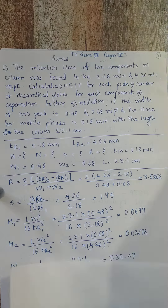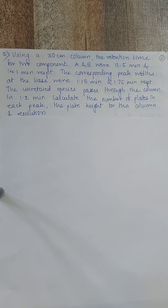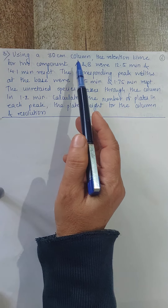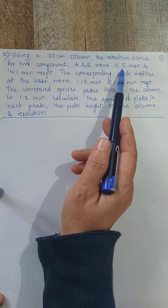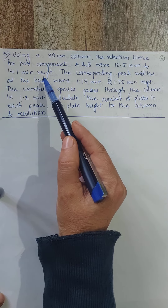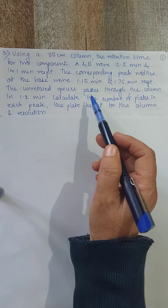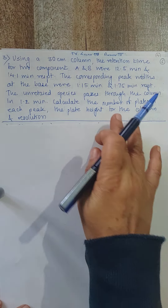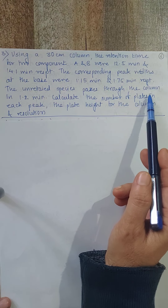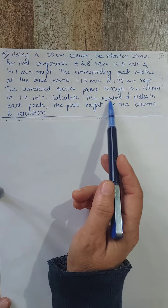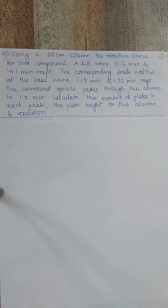Third problem: Using a 30 cm column, the retention times of two components A and B were 12.5 minutes and 14.1 minutes respectively. The corresponding peak widths at the base were 1.15 minutes and 1.75 minutes respectively. The unretained species passes through the column in 1.2 minutes. Calculate the number of plates in each peak, the plate height, and resolution.